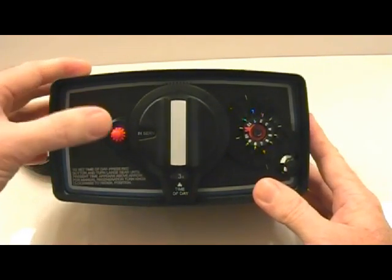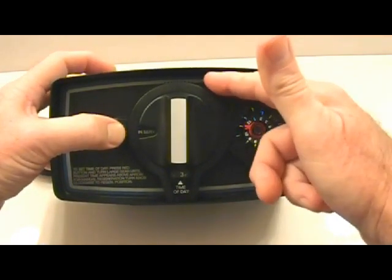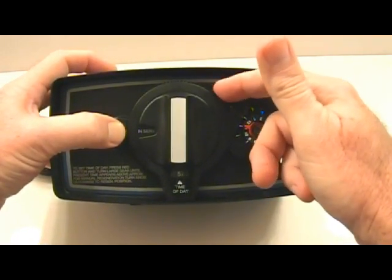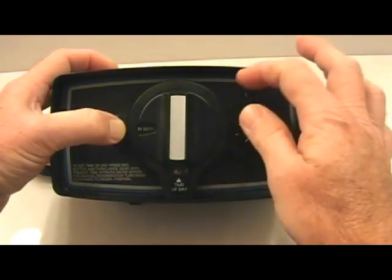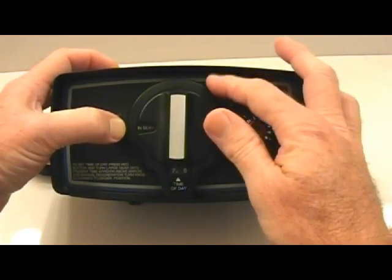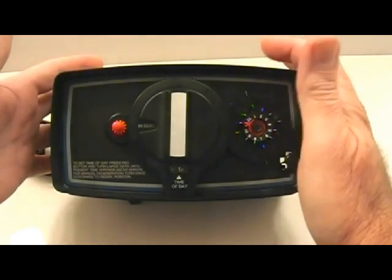To set the time of day, you just press this big red gear button and with your other finger you move this outer gear, which changes the time of day in this window. So let's say it's 1 p.m. Release the button.